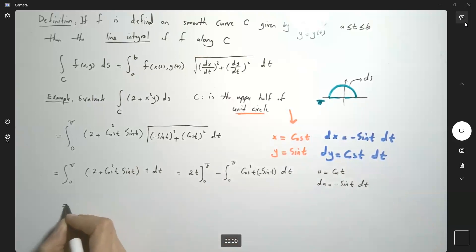Converting with the negative gives us 2t from zero to π plus the negative integral of u², which is negative 1/3 u³, or negative 1/3 cosine³ t, evaluated from zero to π.